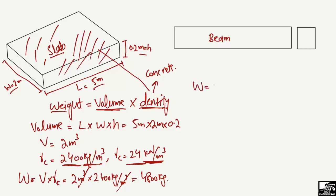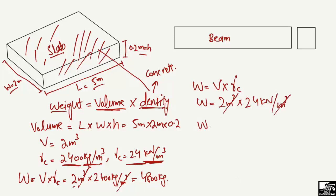Repeating the equation in kilonewton units: weight equals volume times density. Volume is 2 cubic meters multiplied by the density of concrete which is 24 kilonewtons per cubic meter. The cubic meter units cancel out, giving us a weight of 48 kilonewtons for the slab.